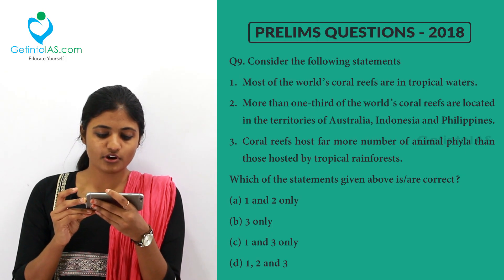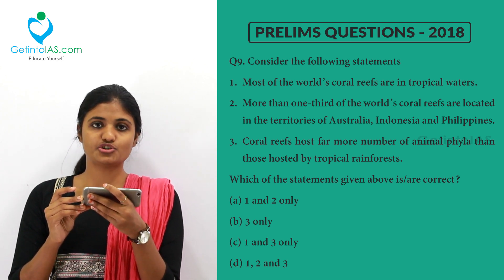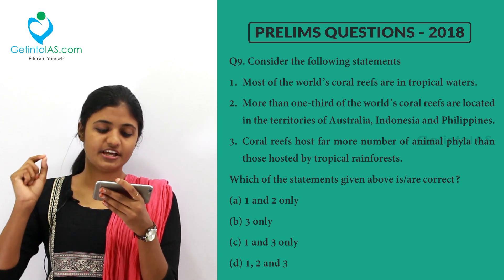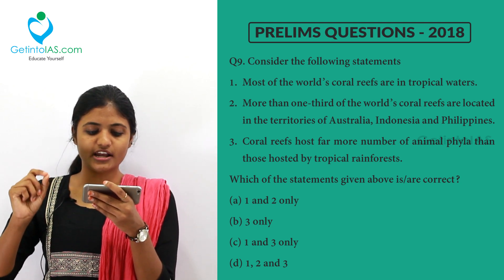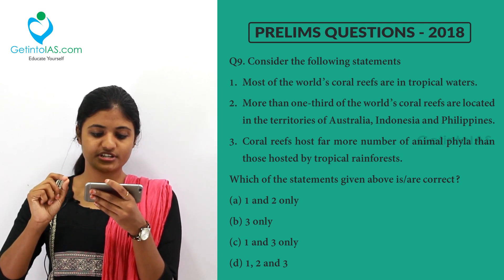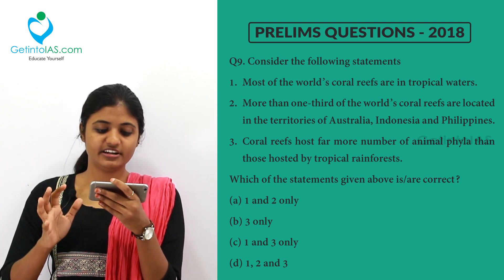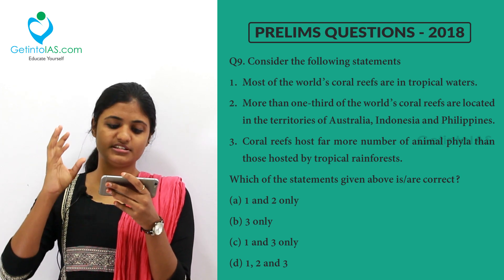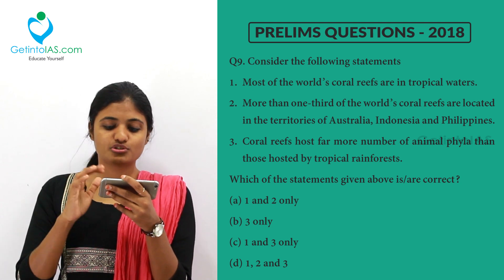So option B is the correct answer: Prosopis juliflora tends to reduce the biodiversity in the area in which it grows. The next question asks to consider statements about coral reefs. Most of the world's coral reefs are in tropical waters — that is why they are called tropical coral reefs. More than one third of the world's coral reefs are located in the territories of Australia, Indonesia, and the Philippines — yes, this is correct, as more than one third are present in Australia, Indonesia, Philippines, France, and Papua New Guinea.